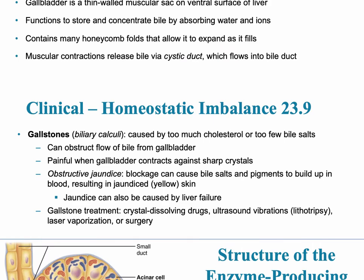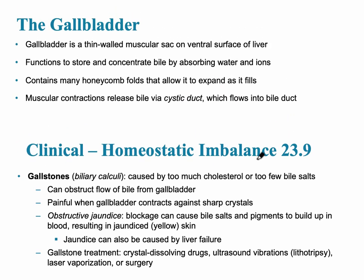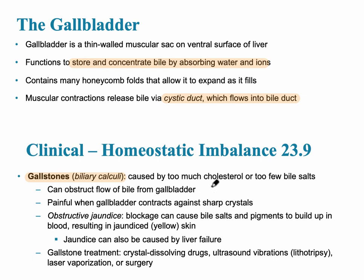The gallbladder is a thin-walled muscular sac on the ventral, anterior surface underneath the liver. Its function is to store and concentrate bile. It's important to note that it does not produce bile — the liver produces the bile — but the gallbladder stores it. Muscular contractions release the bile via the cystic duct, which then flows into the bile duct. The most common homeostatic imbalance associated with the gallbladder is gallstones, usually caused by too much cholesterol in the diet or too few bile salts.